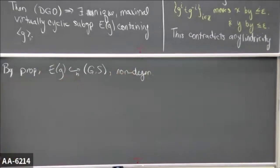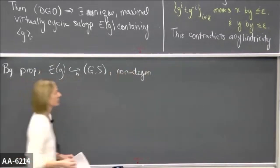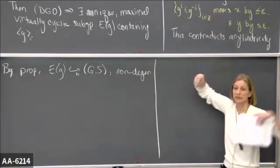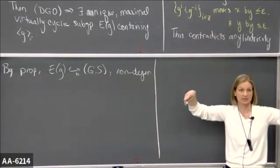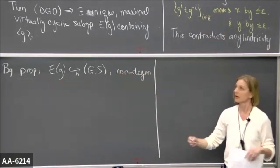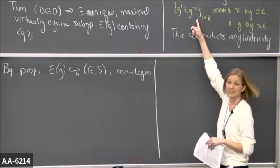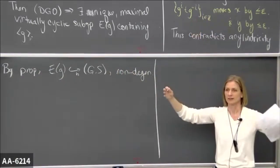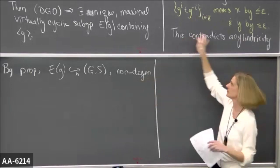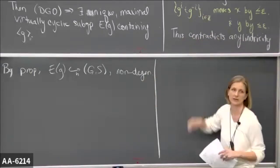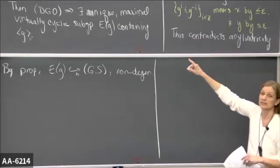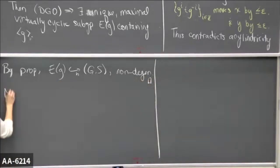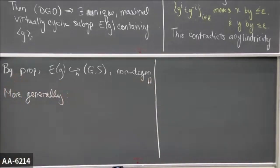More generally, this doesn't use the full strength of acylindricity. One of the things that's very strong about the definition of acylindricity is when you're counting the elements that move these two points by at most epsilon, there is a uniform finiteness. What I found is infinitely many elements — not just finitely many too many, but infinitely many too many. So I really don't need a full acylindrical action here. You don't need the group acting acylindrically on a hyperbolic space.